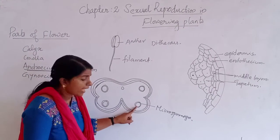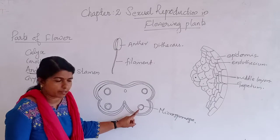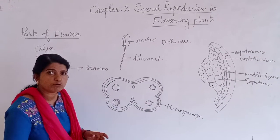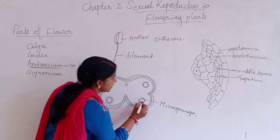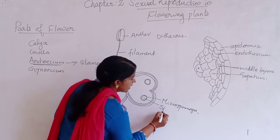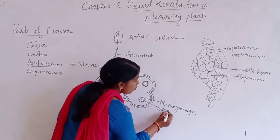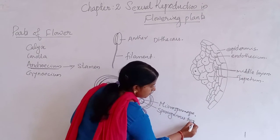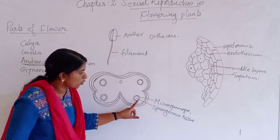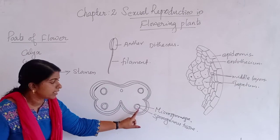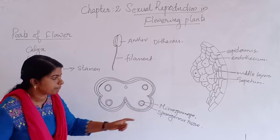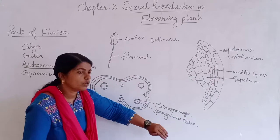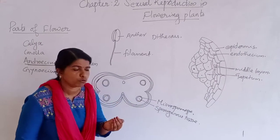Now, within the anther, surrounded by the endothecium layer, you can see a compactly arranged sporogenous tissue at the center. This is known as sporogenous tissue, and it is present at the center of the microsporangia.